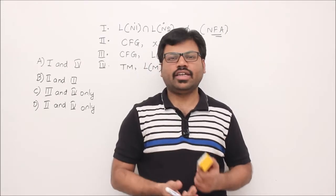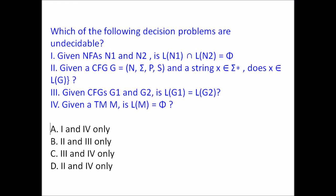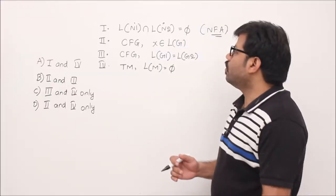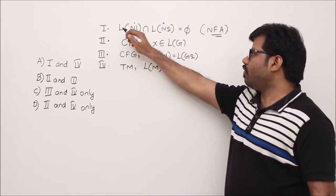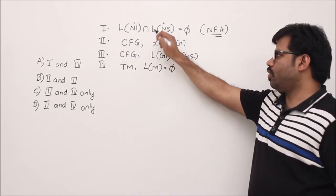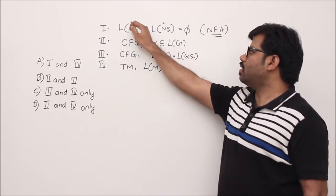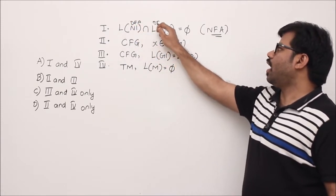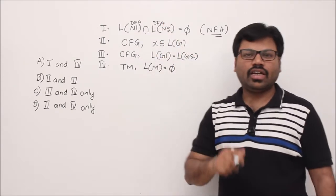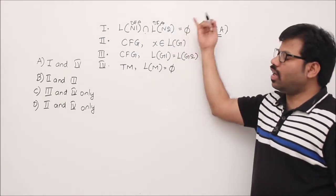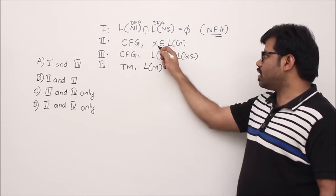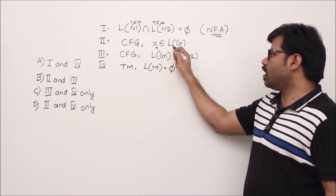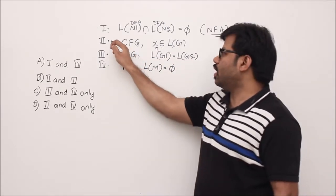We'll see some GATE problems related to Turing machines and decidability. Four statements are given; we have to find which are undecidable. The first one is: language of NFA1 intersection language of NFA2. Since two NFAs are given, we can construct DFAs, apply the product automata, get one more DFA, and check emptiness — we have an algorithm for that, so it is decidable. Second: given a context-free grammar, whether a particular string belongs to that language — CYK algorithm — so decidable.